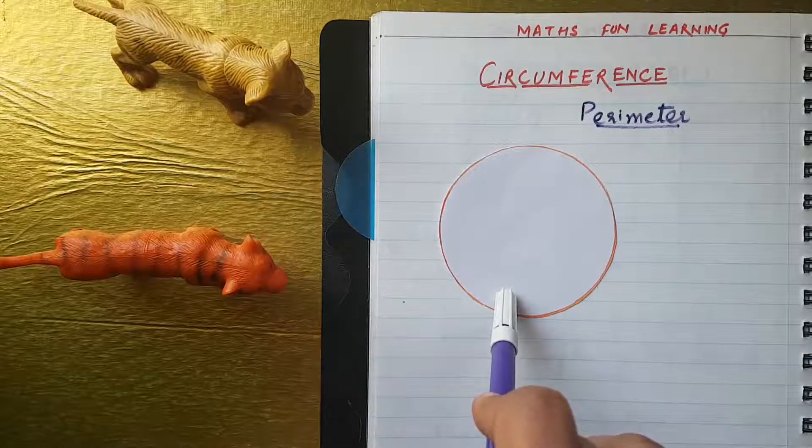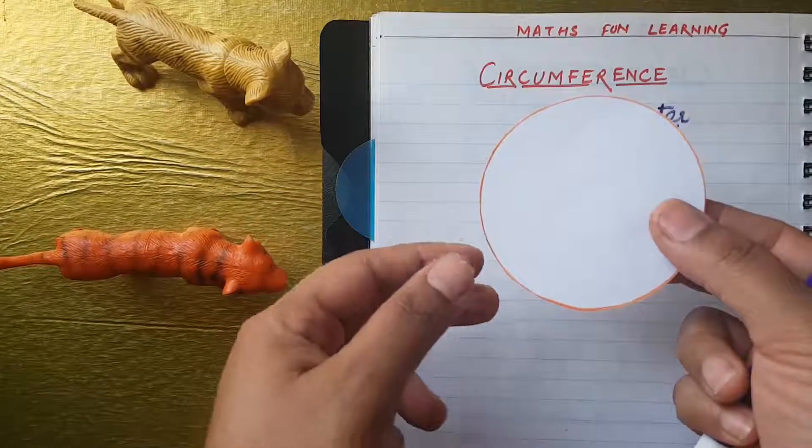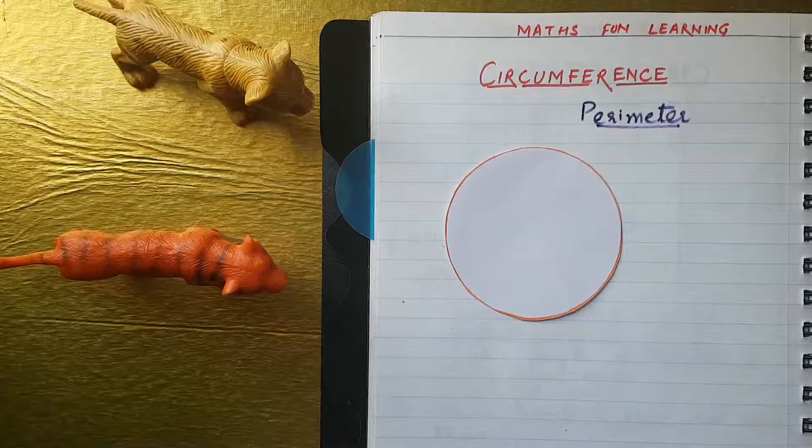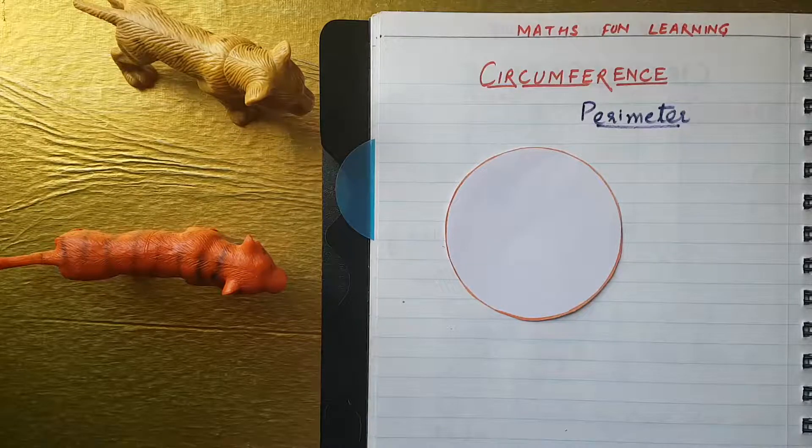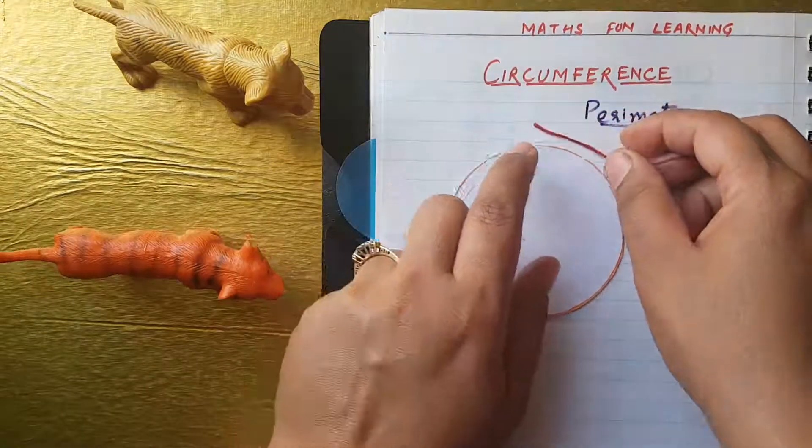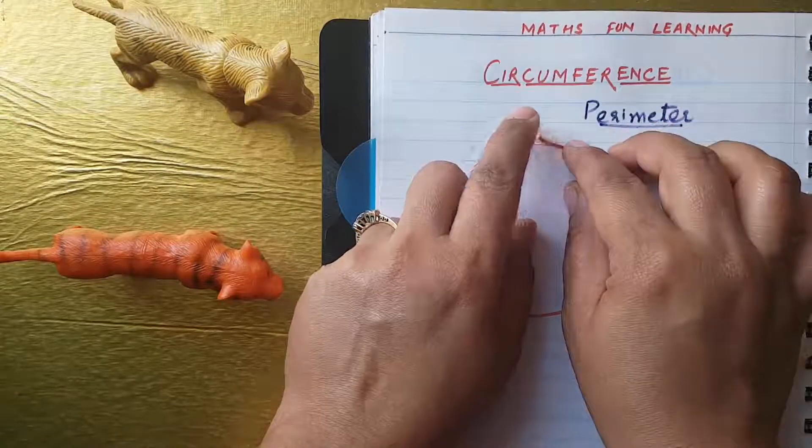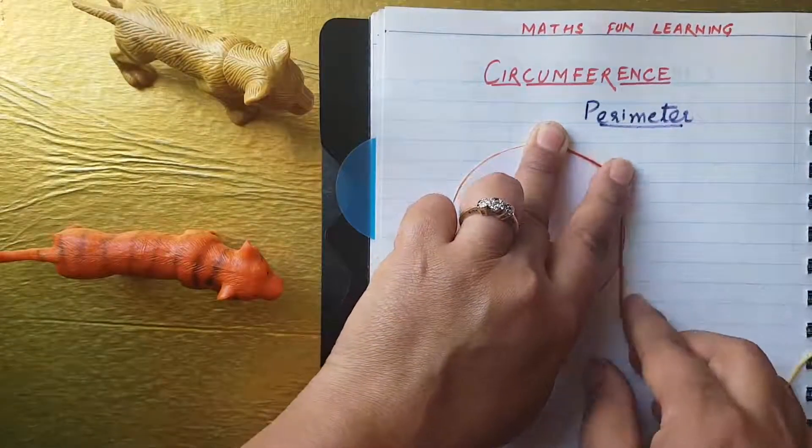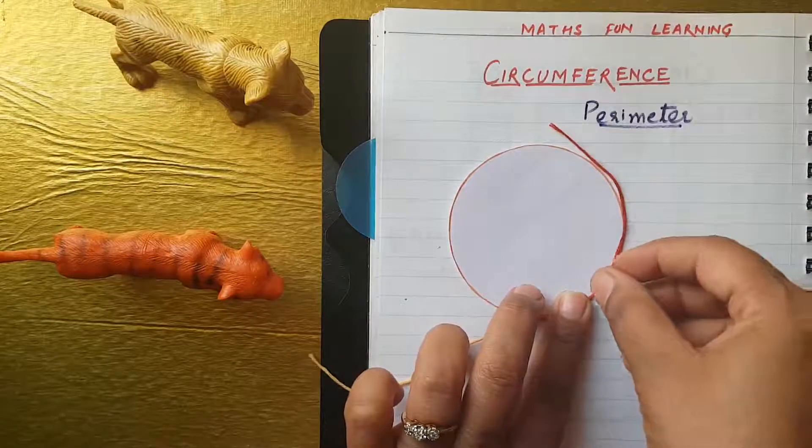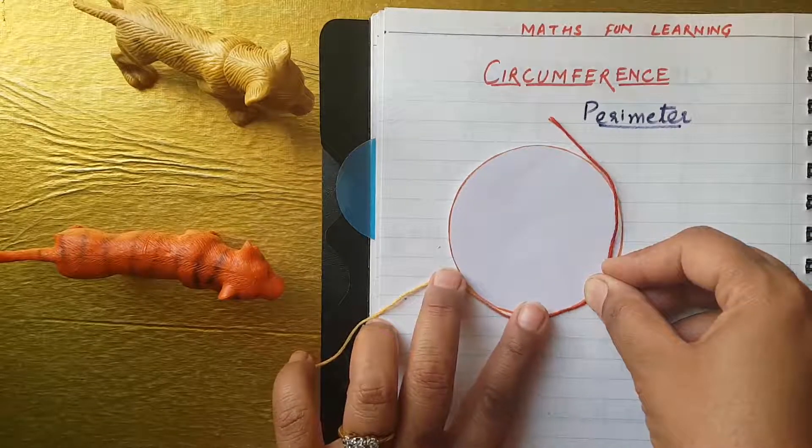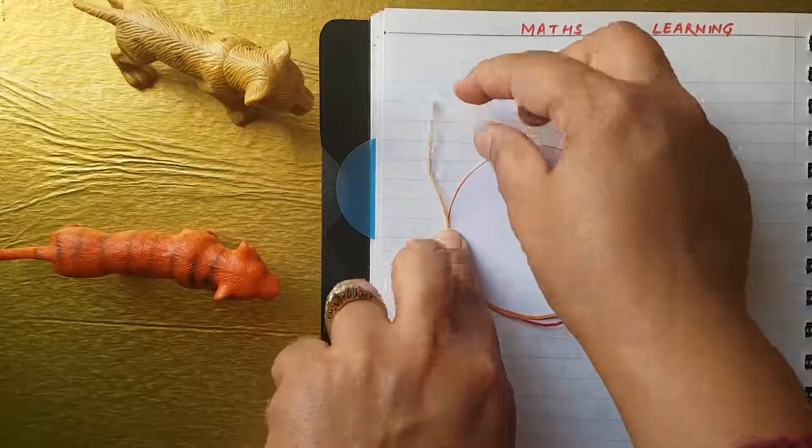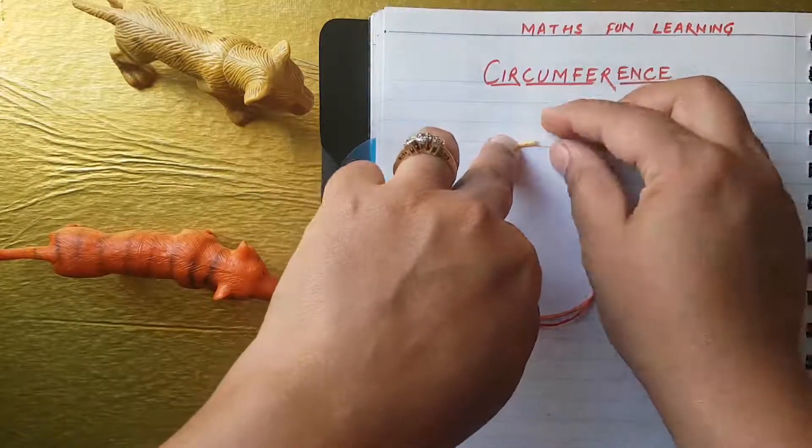So, I cut this circle from one paper. You can also cut one circle or you can draw that circle, one circle in your notebook. And take a one thread, as I have this now. And what we will do, we just try to put it outside of the circle or the boundary of the circle. It's quite difficult, but we have to find out the circumference or the perimeter of the circle. See, it is a curved line. That's why we use here thread.